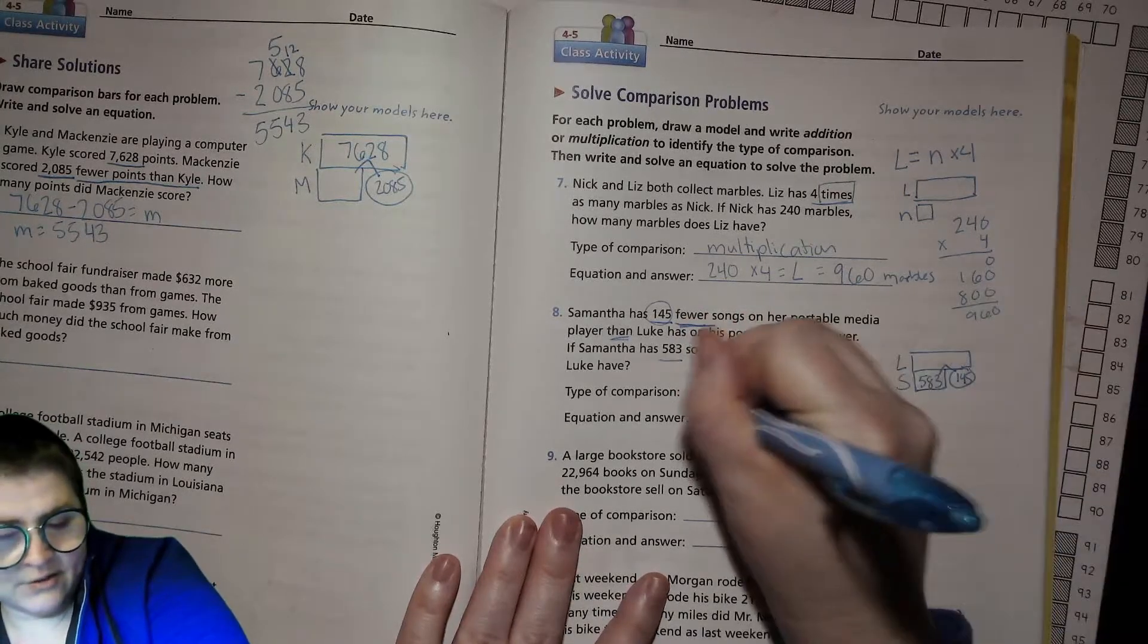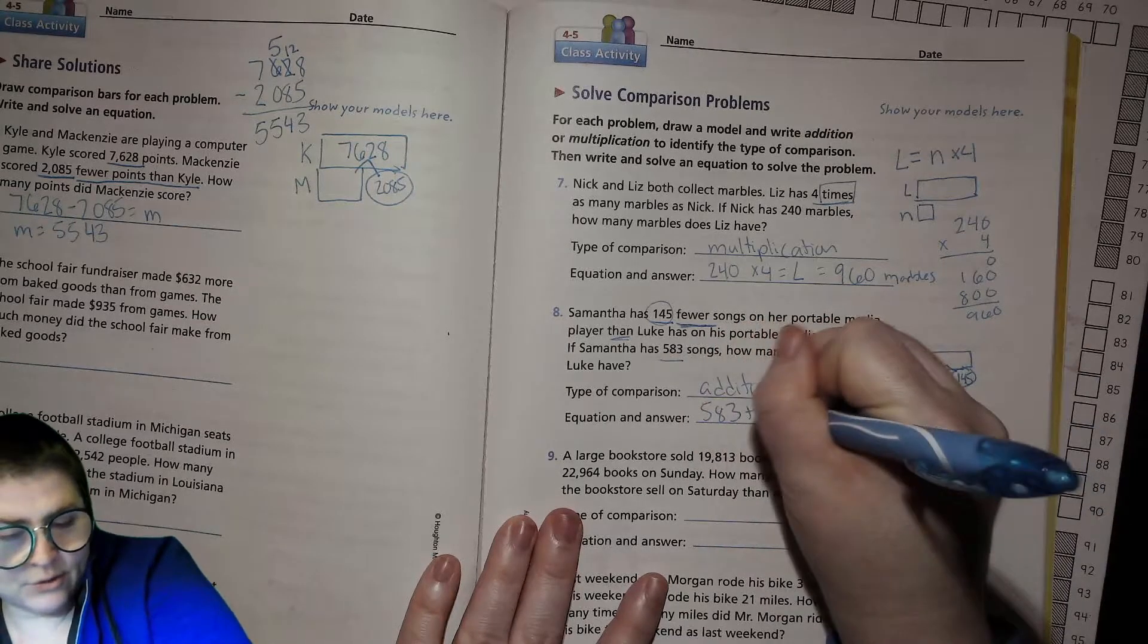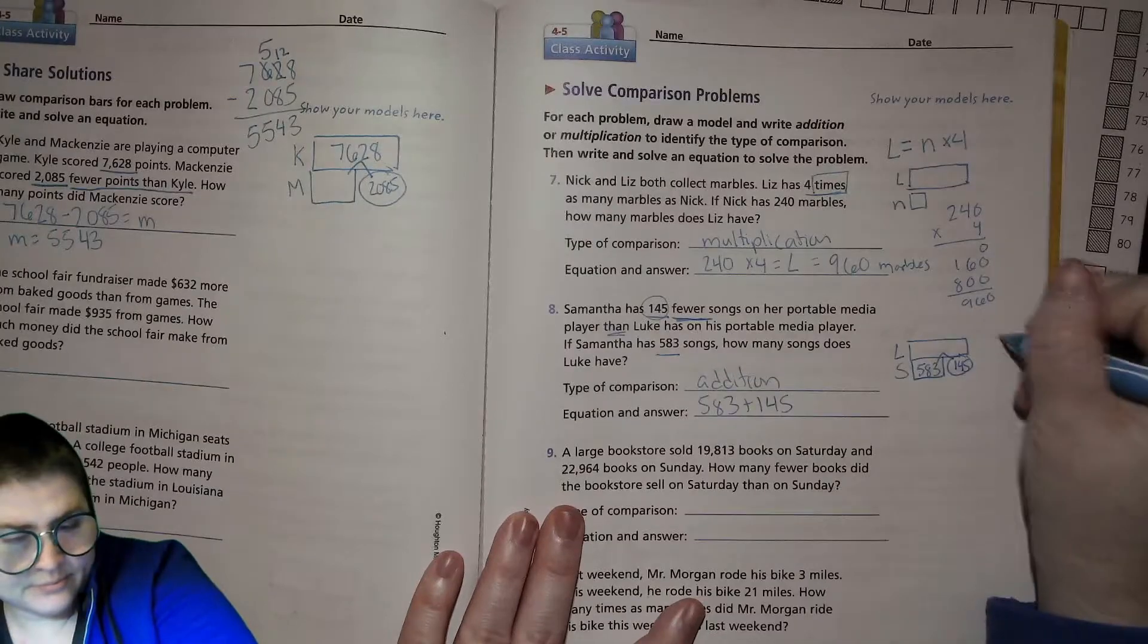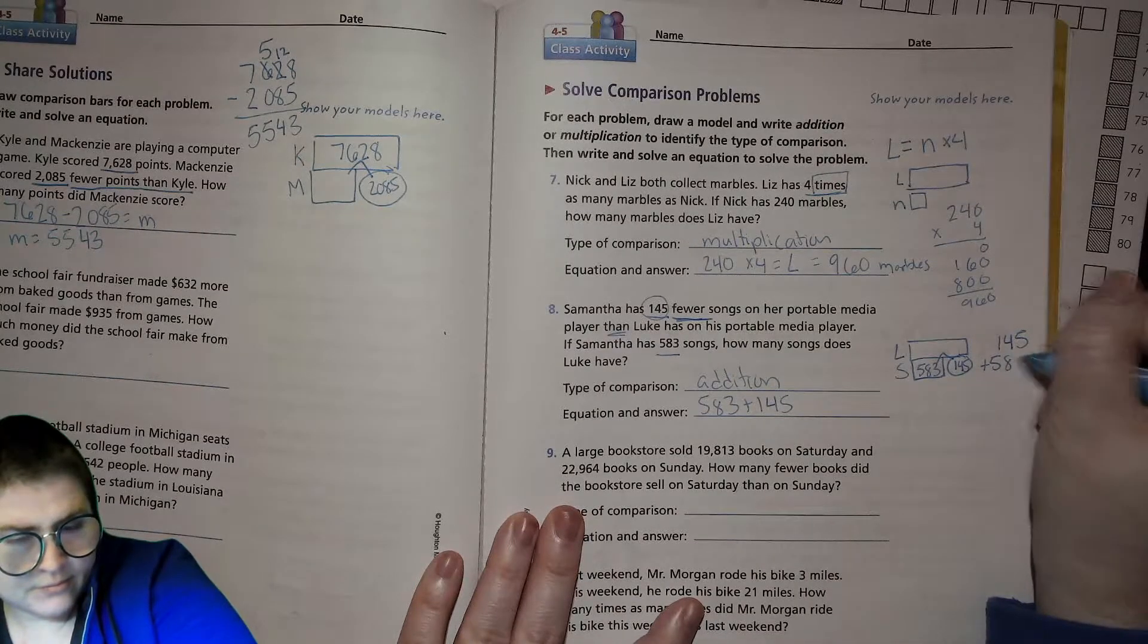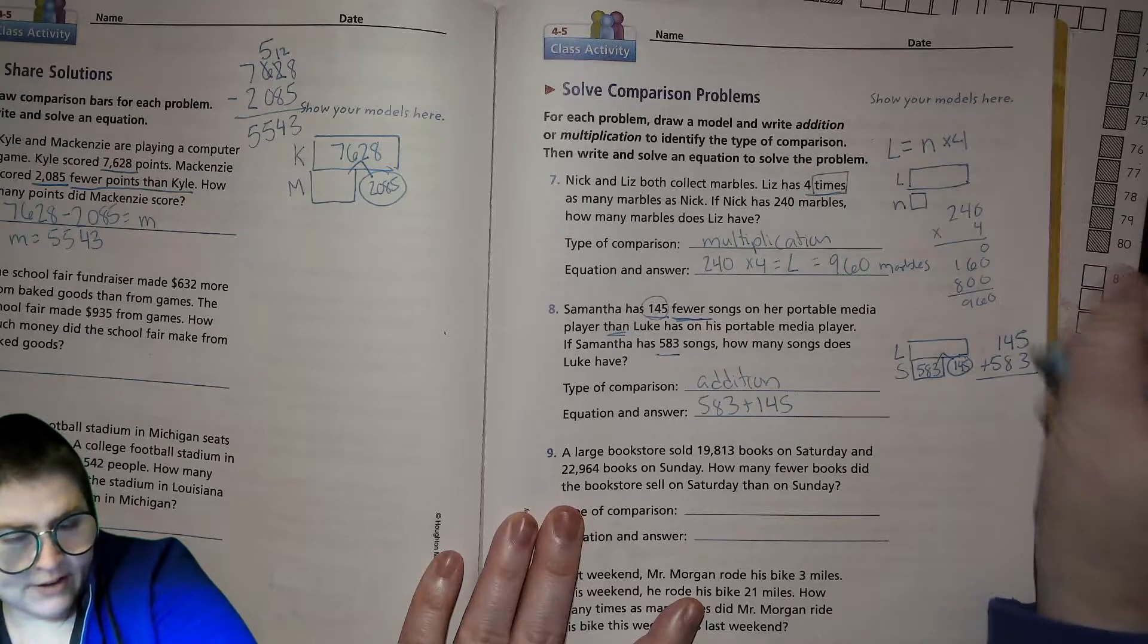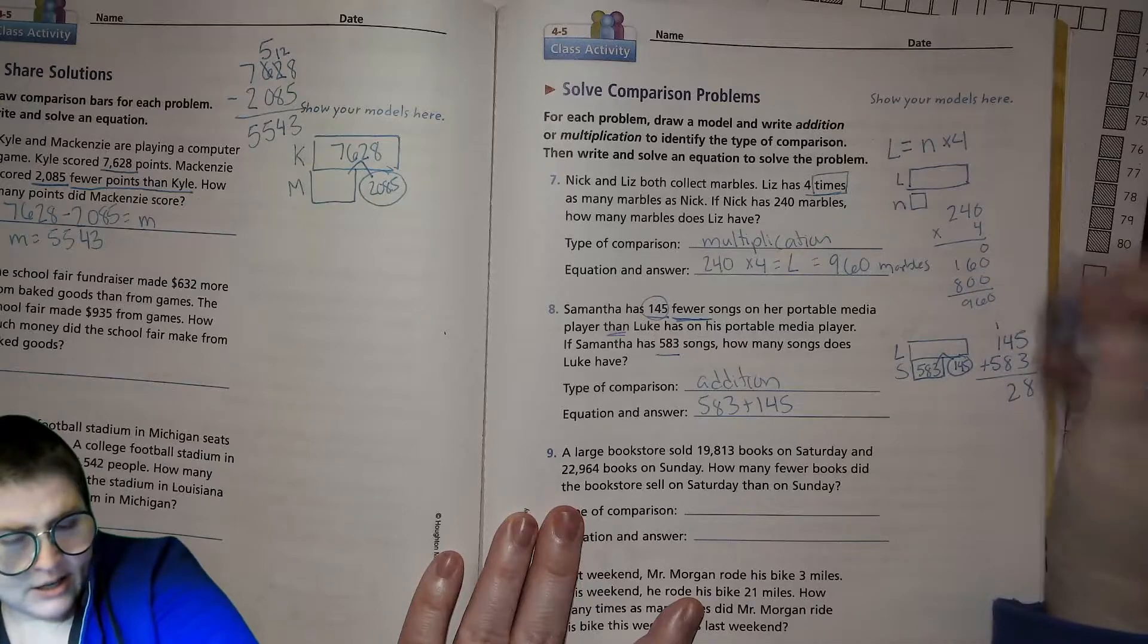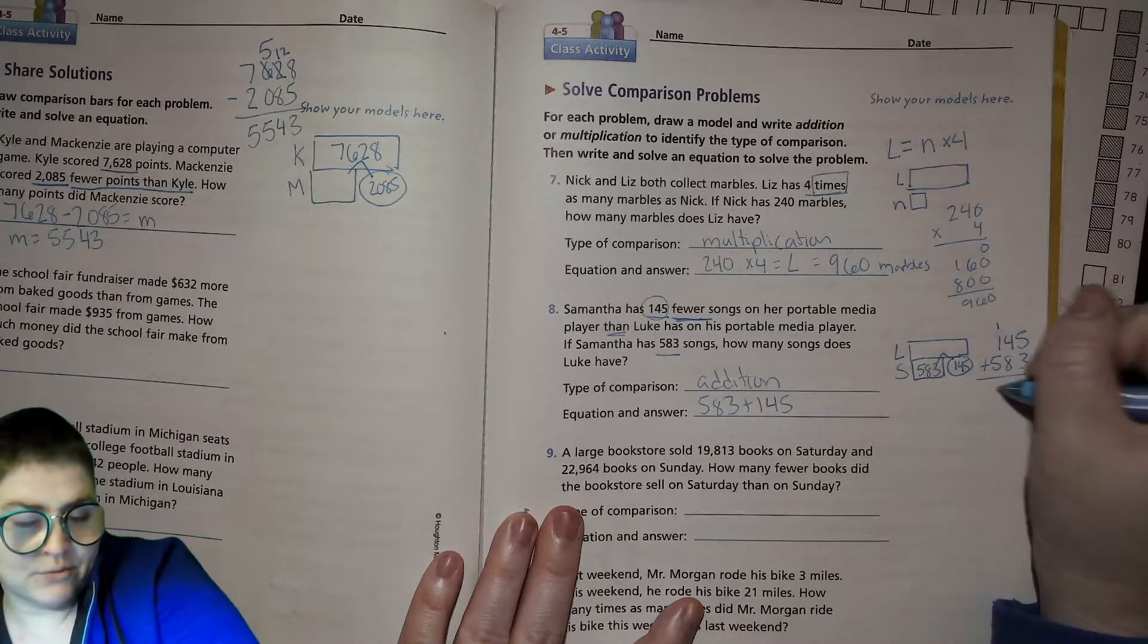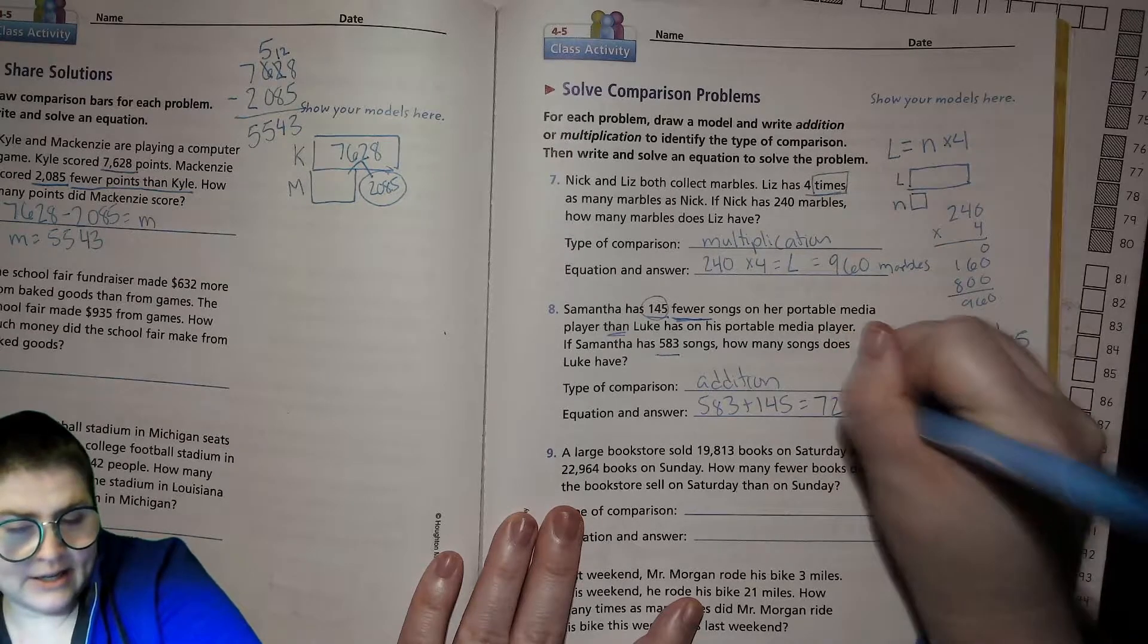So then we're going to do 583 plus 145. 5 plus 3 is 8, 4 plus 8 is 12, and 1 plus 1 is 2 plus 5 more is 7. So 728 songs.